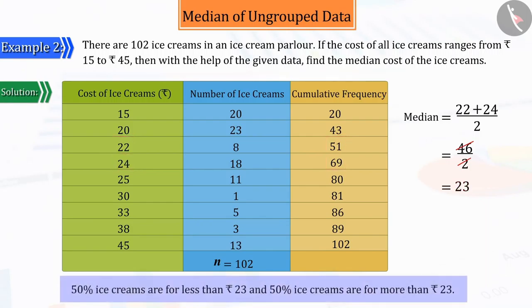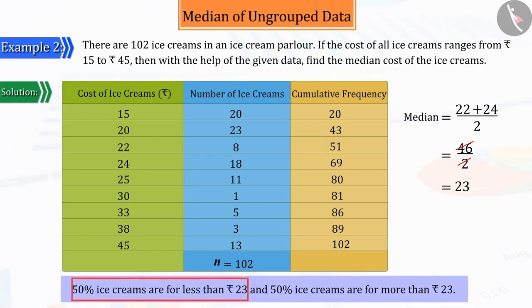Therefore, we can say that almost 50% ice creams are for less than Rs. 23 and the remaining 50% ice creams are for more than Rs. 23.